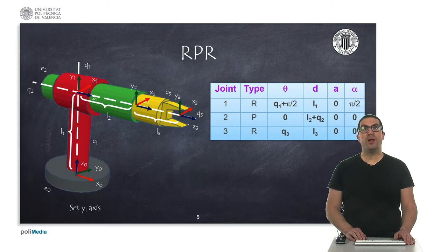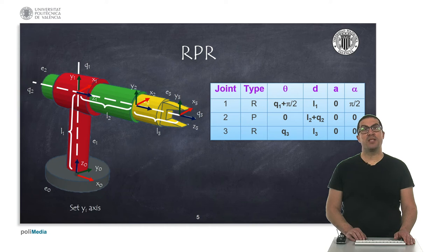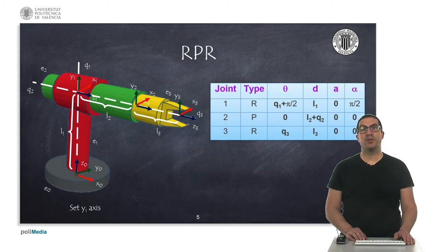The angle theta_i is the angle we must rotate about axis Z_{i-1} so that X_{i-1} points towards X_i. The quantity d_i represents the displacement along axis Z_{i-1}, while a_i is the displacement in the direction of axis X_i. Finally, the angle alpha_i is the rotation around axis X_i so that Z_{i-1} is aligned with Z_i.